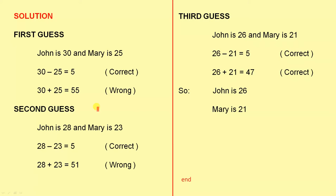For our second guess, John is 28 and Mary is 23. The reason we do that, we know that this addition is too large, so we have to go lower. We have to pick lower ages. 28 minus 23 is 5. That's correct because the difference is 5. 28 plus 23 is 51. That's wrong because the sum has to be 47.